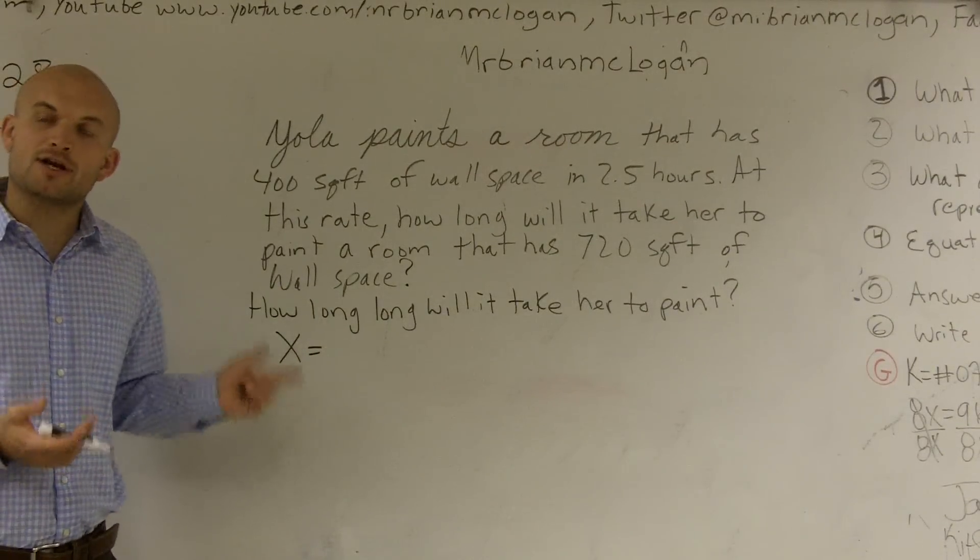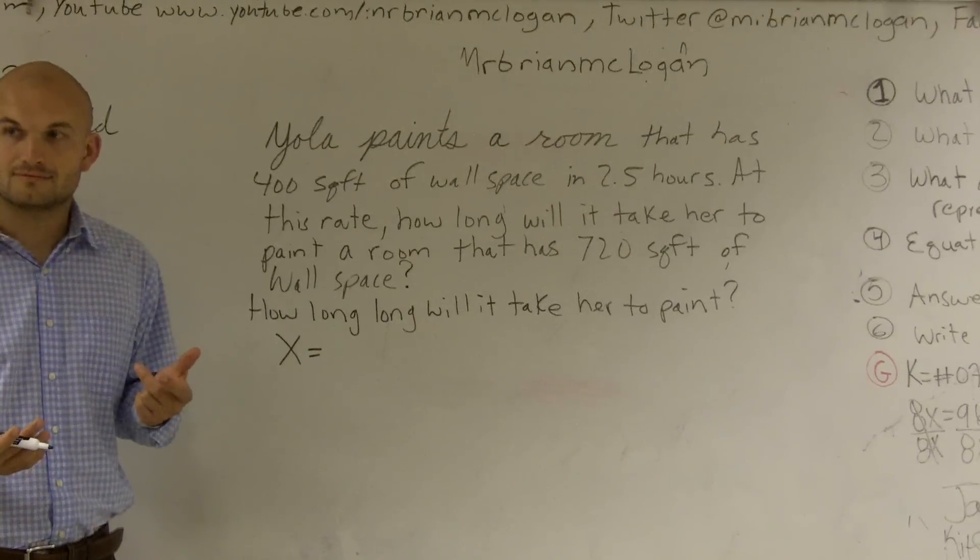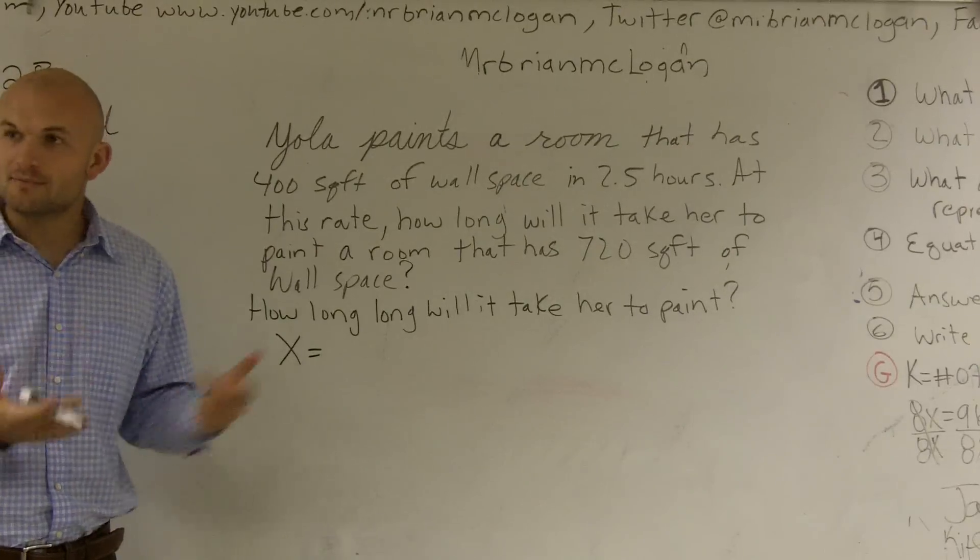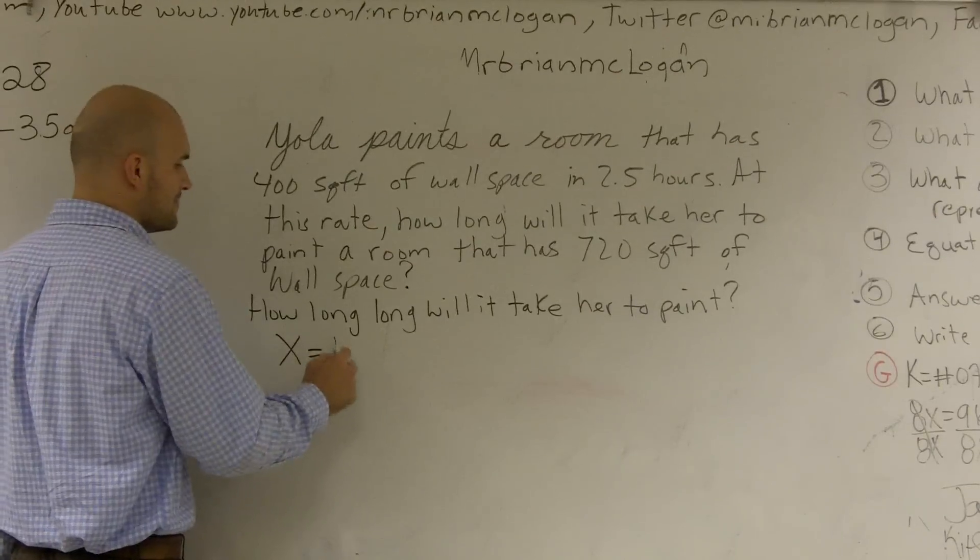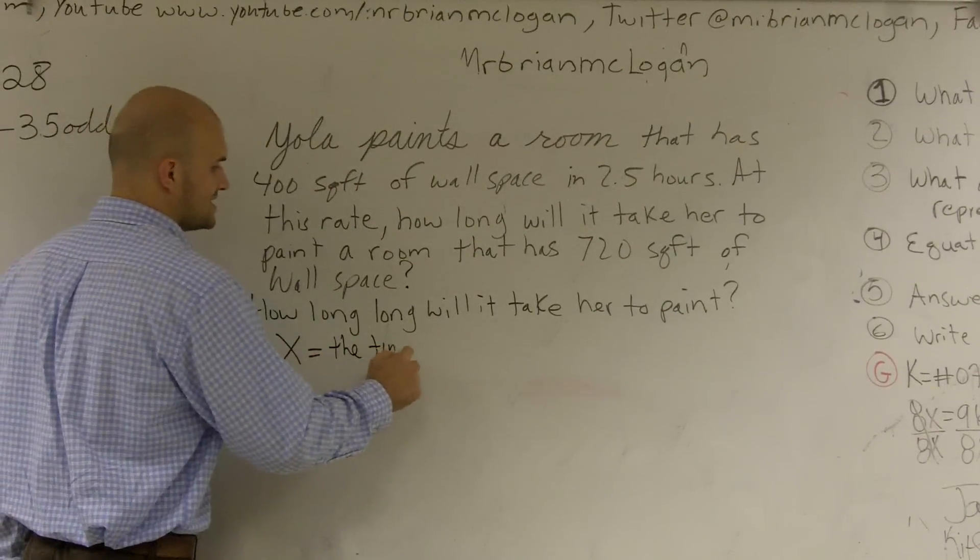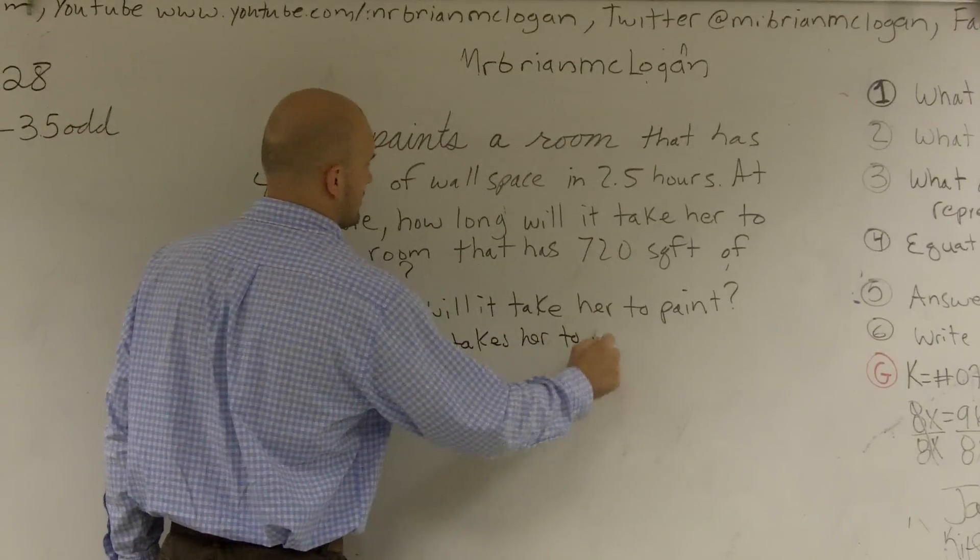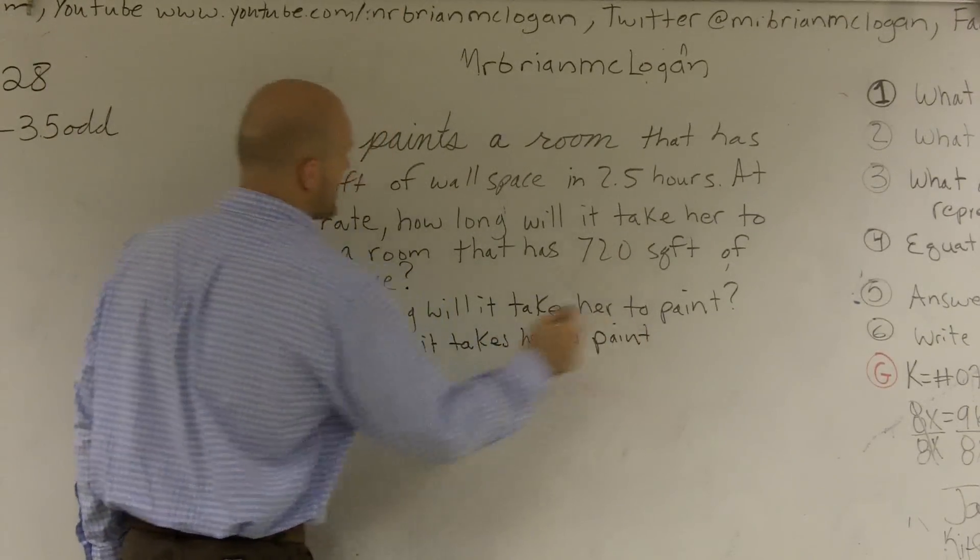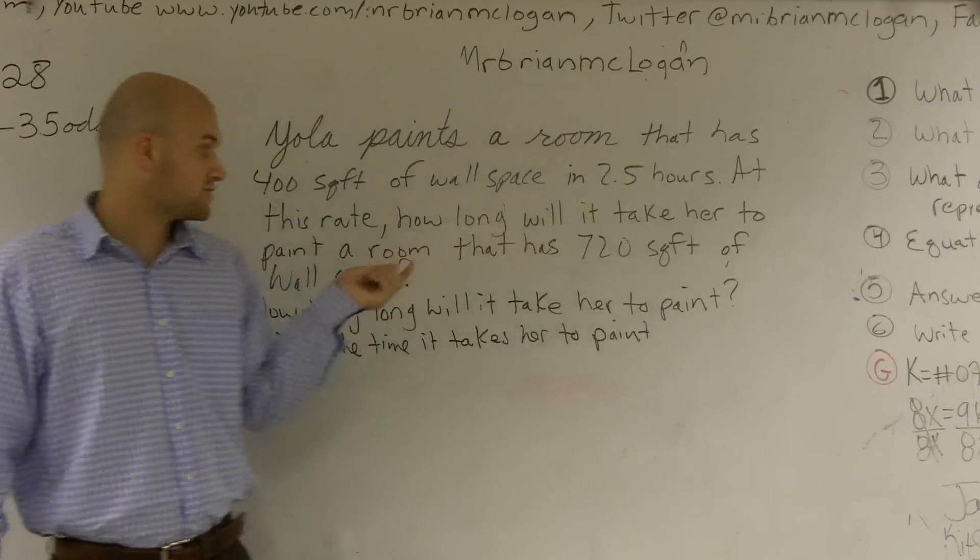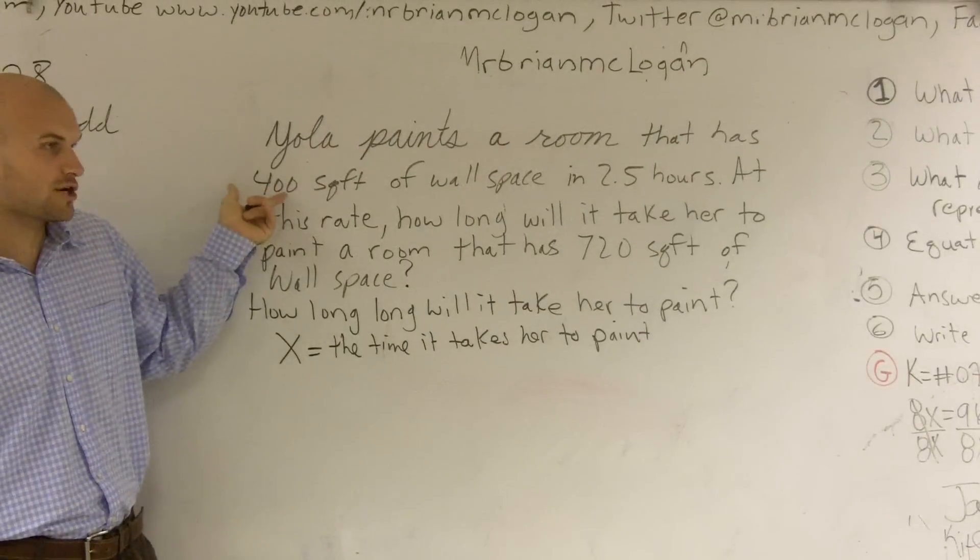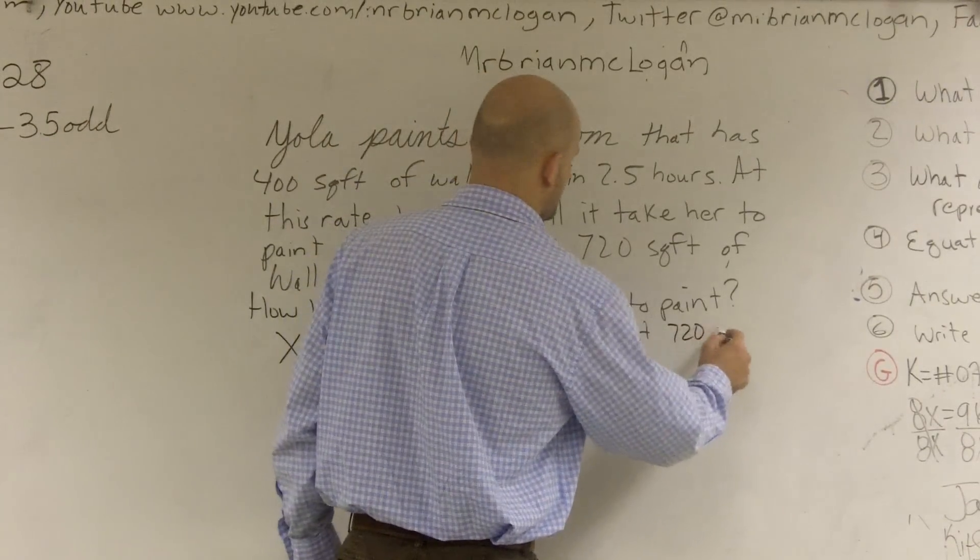If you guys notice, your variable and your question are very similar. They're intertwined. They work with each other. So my variable is going to be the time it takes her to paint. And not just the time it takes her to paint, but the time it takes her to paint 720 square feet. Because we already know how long it takes her to paint 400 square feet. That's 2.5 hours. So this is the time it takes her to paint 720 square feet.